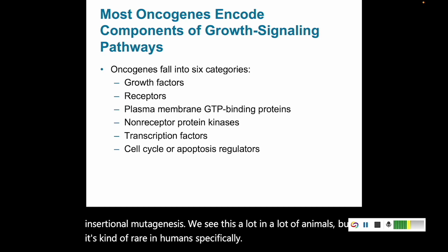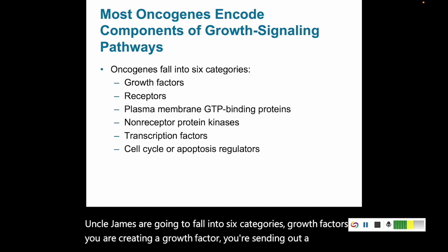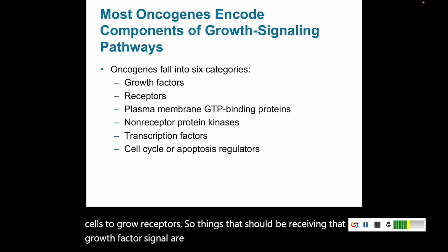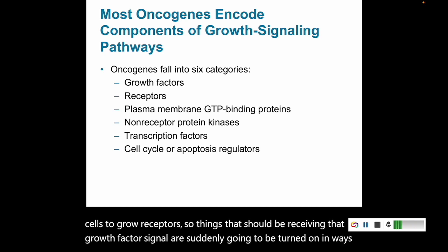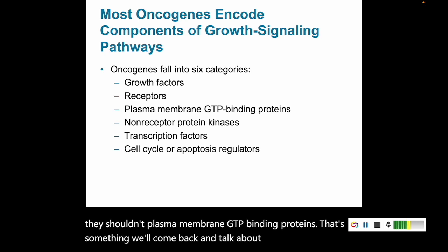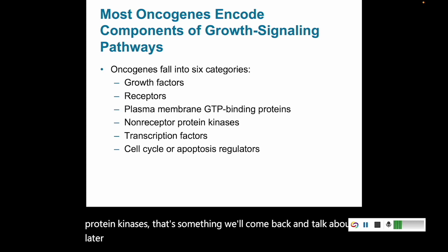Oncogenes fall into six categories: growth factors, where you are creating a growth factor and sending a signal for cells to grow; receptors, things that receive growth factor signals that are turned on inappropriately; plasma membrane GTP-binding proteins; non-receptor protein kinases; transcription factors; and regulators of either the cell cycle or apoptosis.